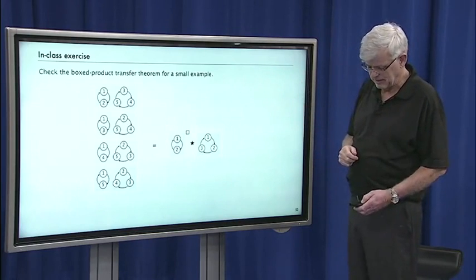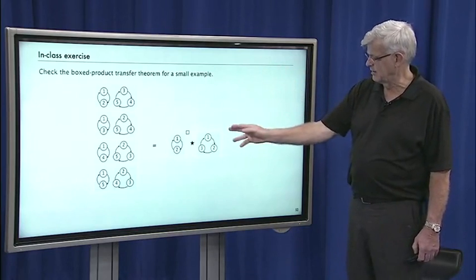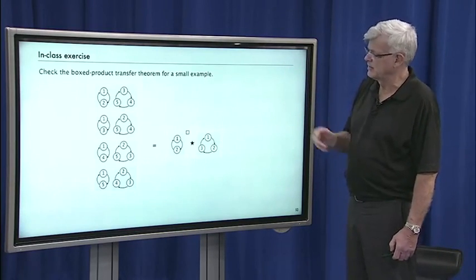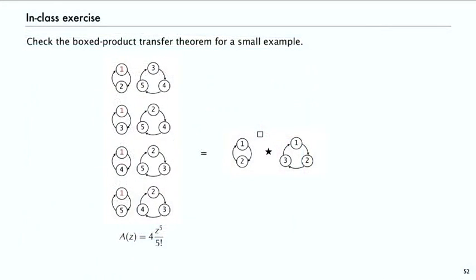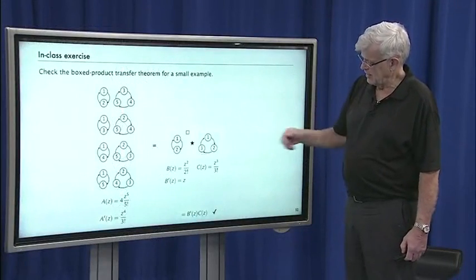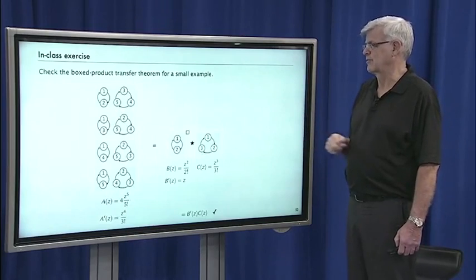Let's verify with a small example. The set {1,2} boxed-star {1,2,3} gives those four objects, with generating function 4 z^5 / 5!. The generating function for B(z) is z^2 / 2! and for C(z) is z^3 / 3!. Then A'(z) equals 4 times z^4 / (5!/5) which simplifies correctly, and B'(z) is z — so A'(z) equals B'(z) times C(z) checks out. We have an operation and a transfer theorem.